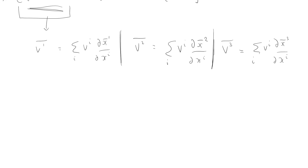And there it is — there's my transformation law. We've got one and one, two and two, three and three. I'm going to stop there before I make a mistake; it's easy to make mistakes with so many i's and j's and bars. I'll finish this off in the next screencast.